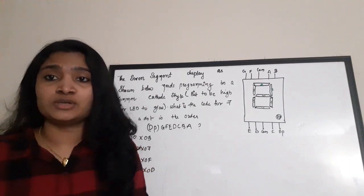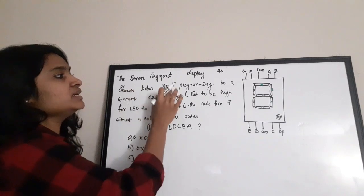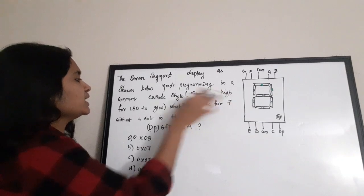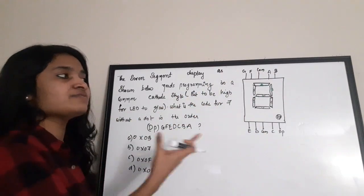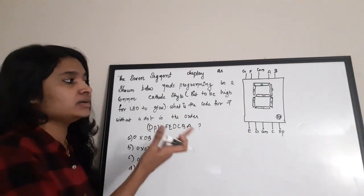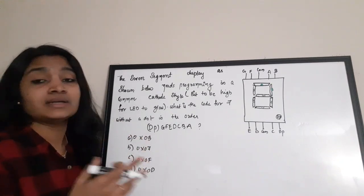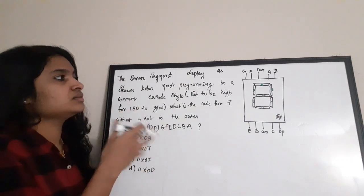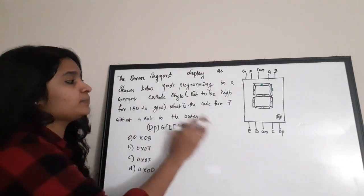The 7-segment display as shown needs programming in a common cathode style, meaning the bit needs to be high for the LED to glow. This is a 7-segment display — you may have done experiments using it while doing programming with interfacing of 8051 or similar labs.